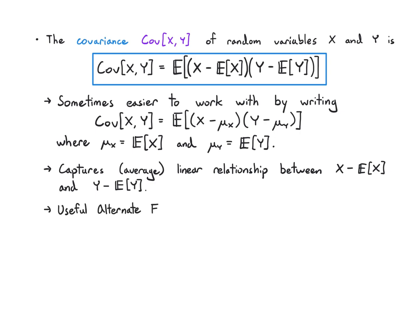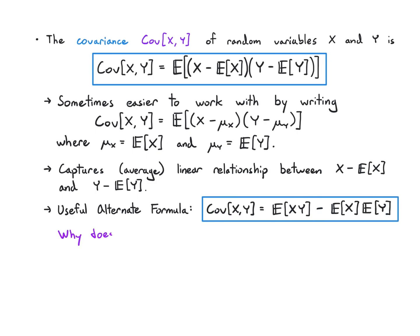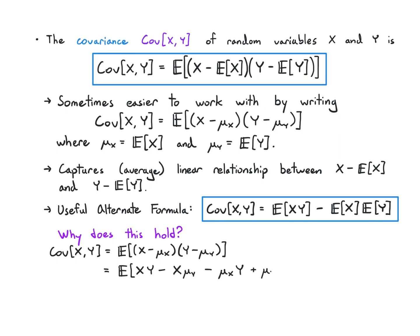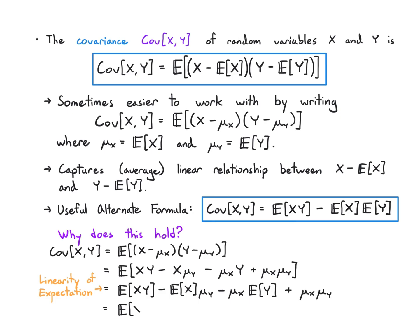A useful alternative formula, similar to the one in the variance case, is that the covariance equals e of xy minus e of x times e of y. This is sometimes easier to compute. Why does it hold? The answer is linearity of expectation. We expand the product using FOIL, then use linearity of expectation to move the expectation into each term. We see that e of x times μy, μx times e of y, and the constant μxμy — since μx is e of x and μy is e of y, these last three terms combine to just minus e of x times e of y.